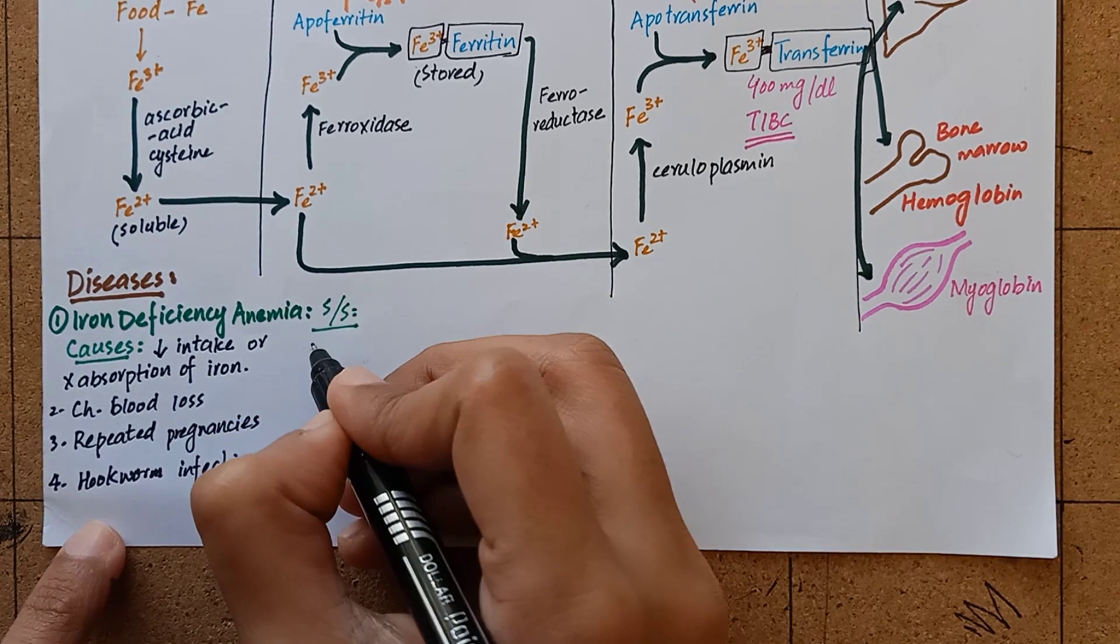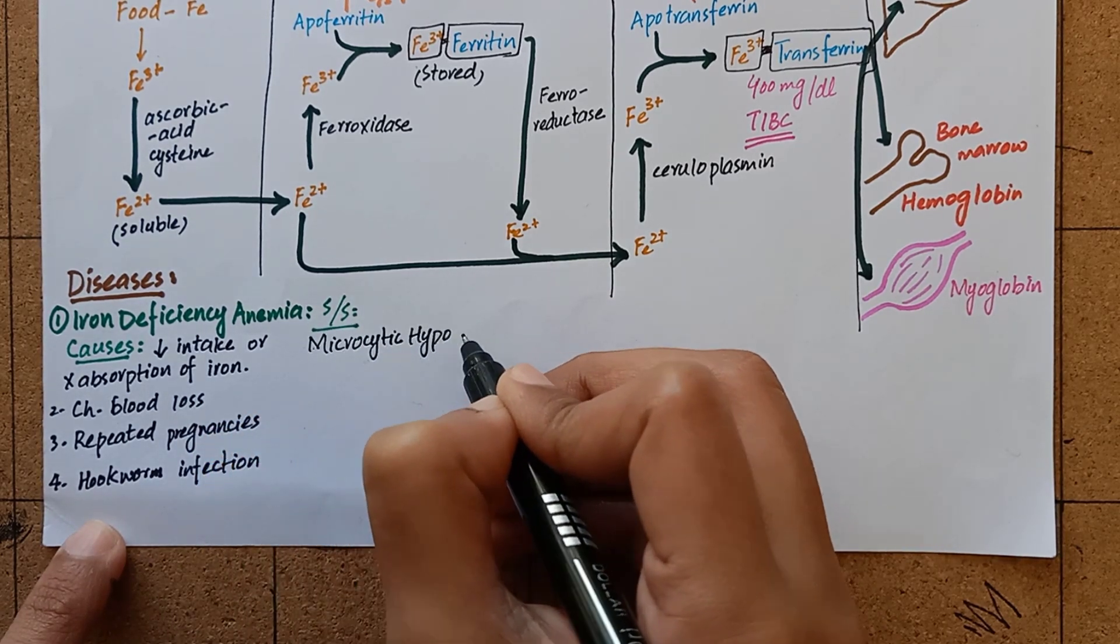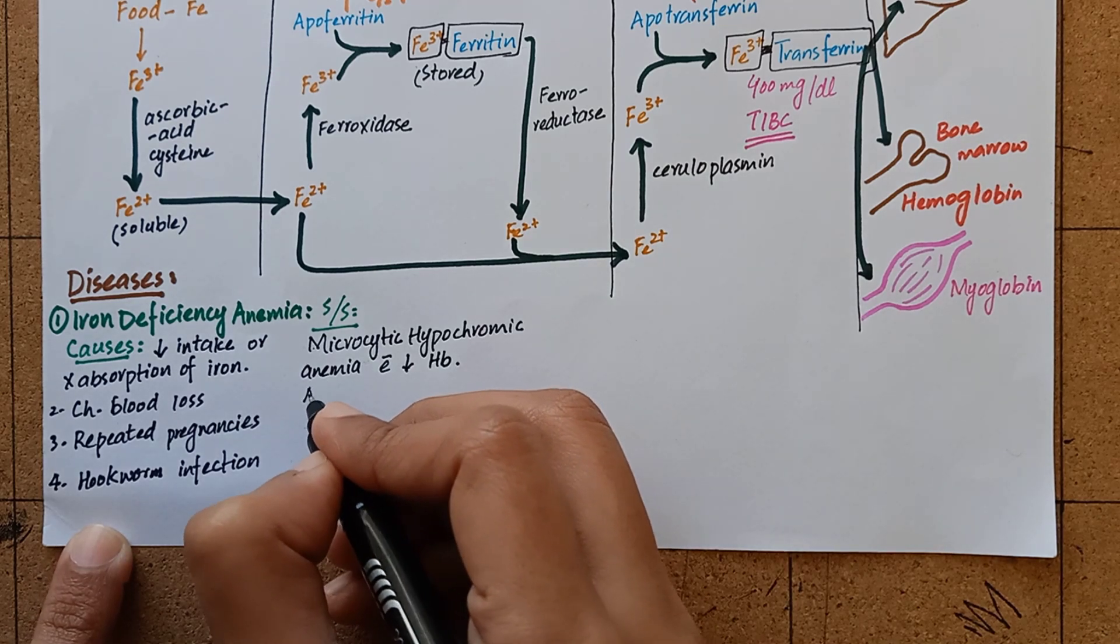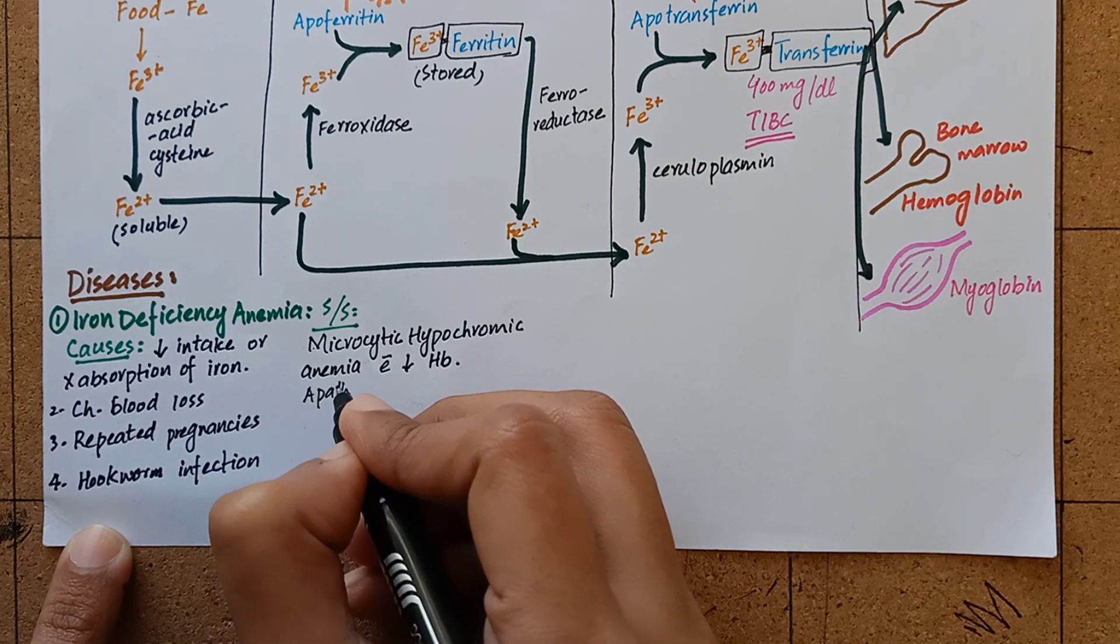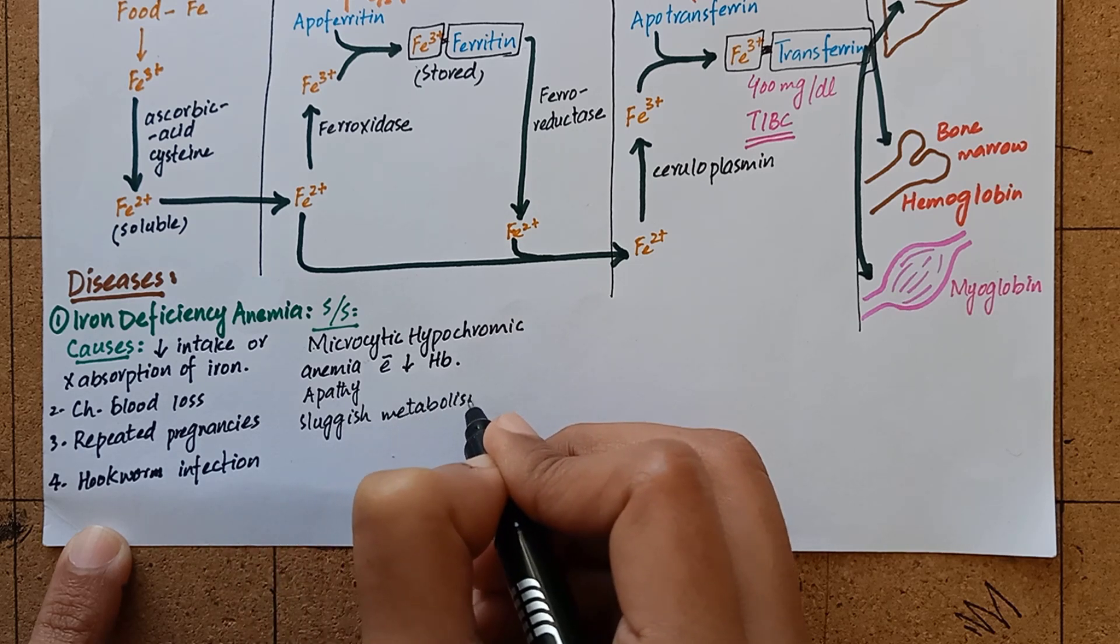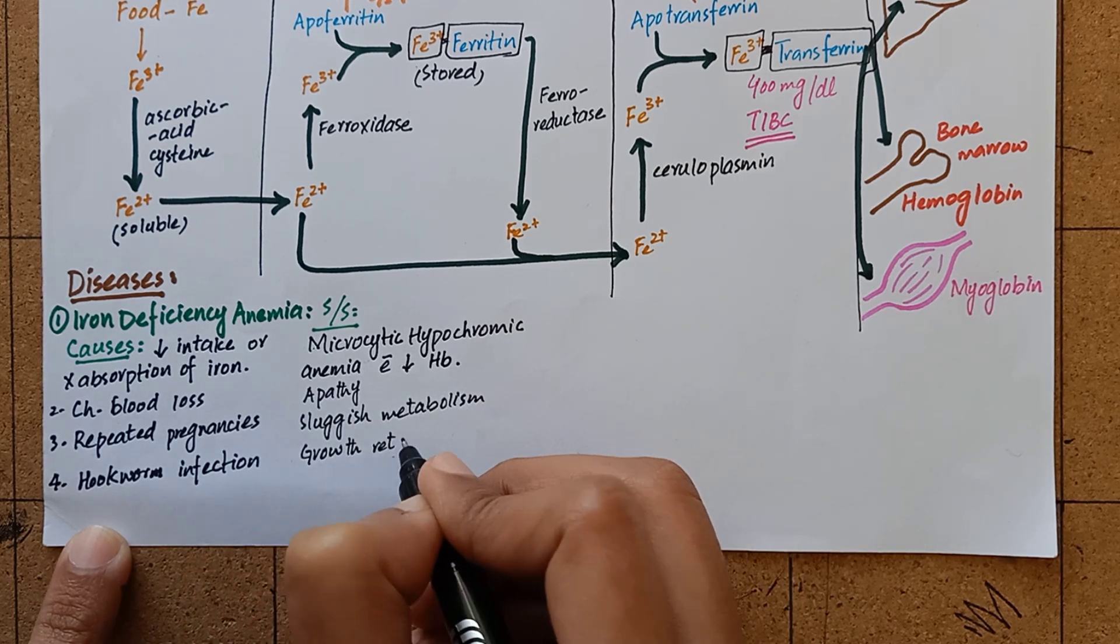It is characterized by microcytic hypochromic anemia with low hemoglobin levels. Other manifestations include apathy which means being dull and inactive, sluggish metabolic activities, retarded growth, and loss of appetite.